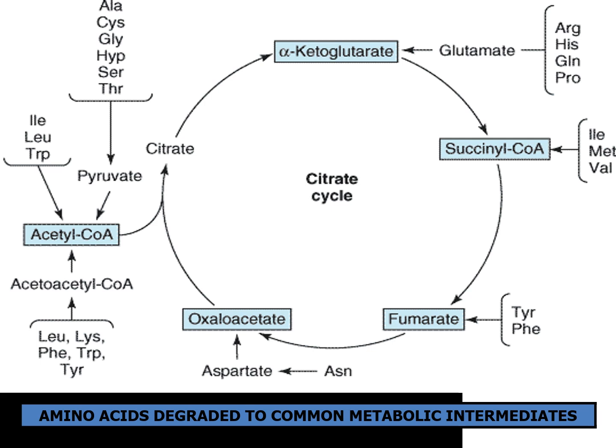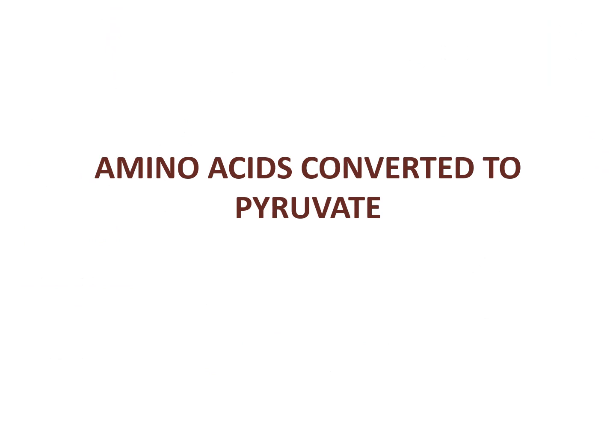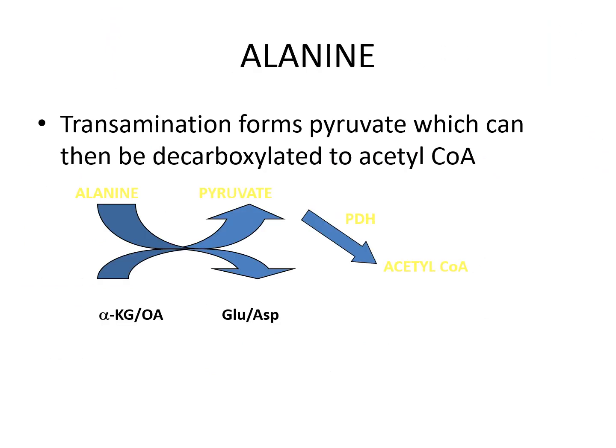This is the summary of all those previous slides — amino acids degraded to common metabolic intermediates entering various parts of the citric acid cycle. Alanine is converted to pyruvate via transamination, which can then be decarboxylated to acetyl-CoA.